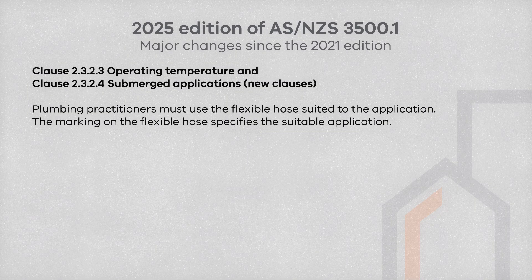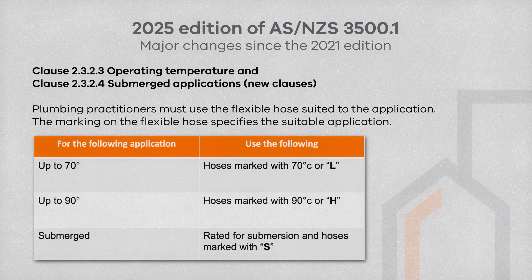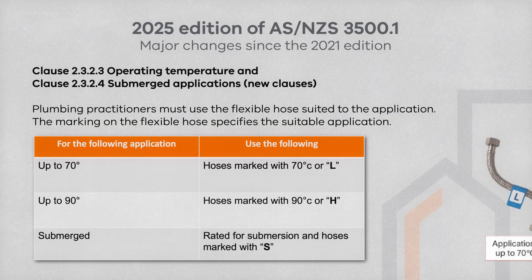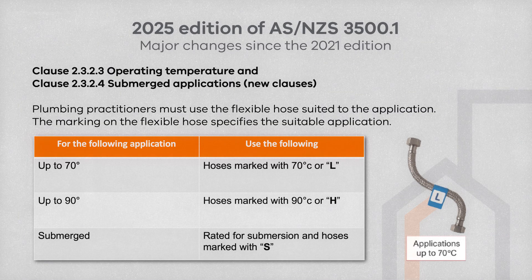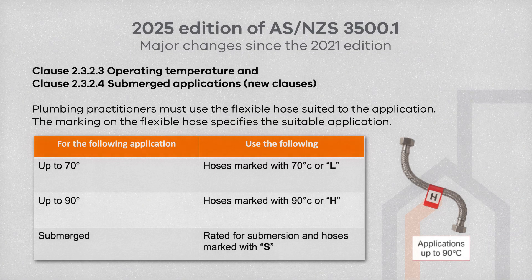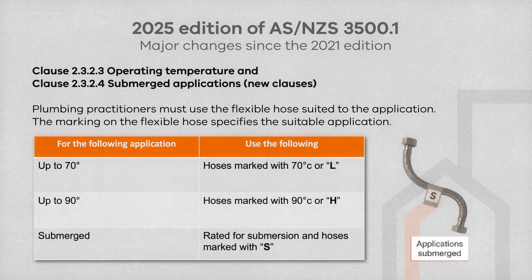There is a new Clause 2.3.2.3 regarding the operational temperature range of flexible hose assemblies, also covering applications where the hose may be submerged. You must only use a hose assembly rated for its intended application. For hoses rated for applications up to 70 degrees Celsius, they are marked with '70°C' or the letter 'L'. For hoses rated up to 90 degrees Celsius, they are marked with '90°C' or the letter 'H'. In submerged applications, hoses must be rated for submersion and marked with the letter 'S'. Hoses marked with S may have a protective external coating or additional resistance to corrosion.